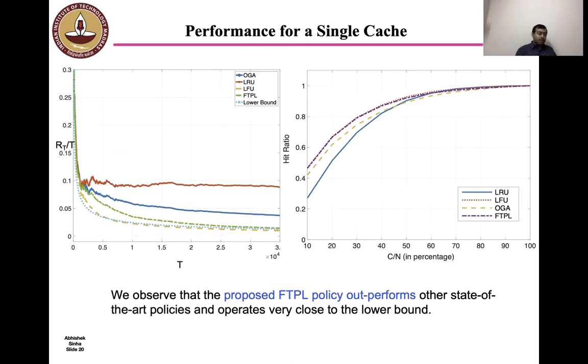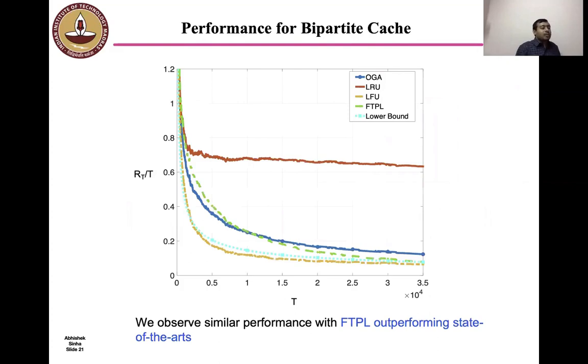From the first plot, we see that FTPL performs significantly better than LRU and operates very close to the theoretical lower bound. From the second plot, we see that the FTPL policy achieves a hit rate of 80% when the cache size is only 30% of the library size. This is a big improvement compared to the LRU policy. Even for the case of bipartite caching, we observed similar performance figures as for the single cache setting.